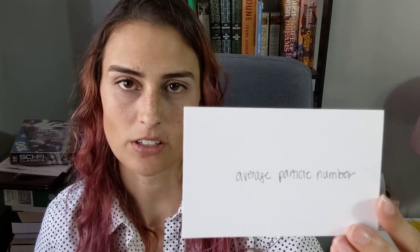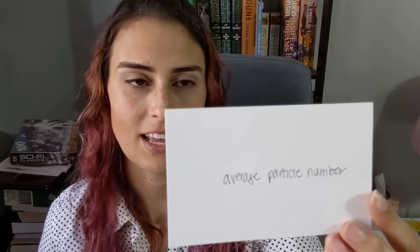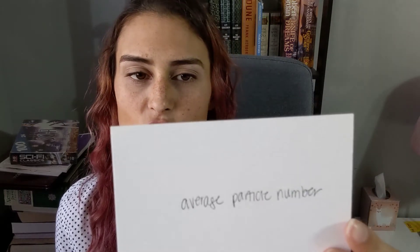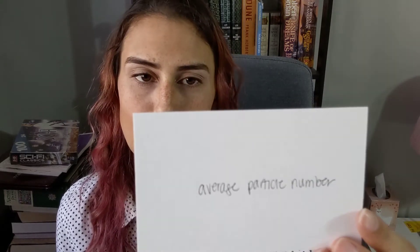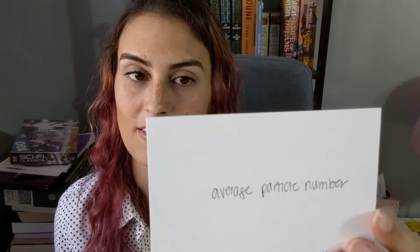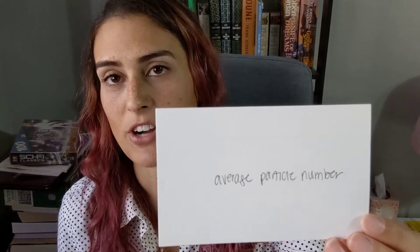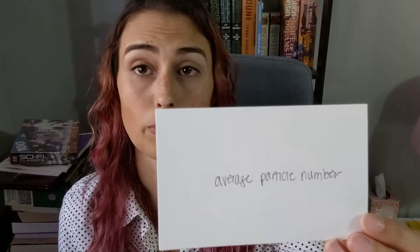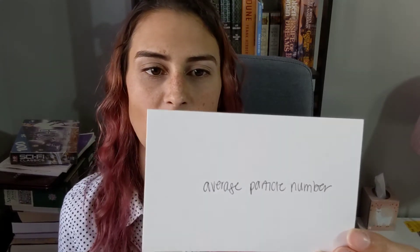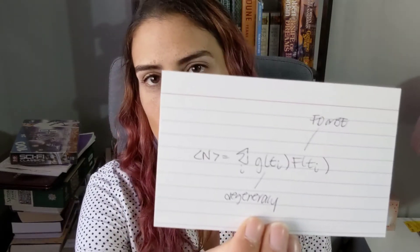The average particle number N is given by the sum over i of g(epsilon sub i) times f(epsilon sub i), where f is either the Fermi-Dirac distribution or the Bose-Einstein distribution, and g is the degeneracy function.